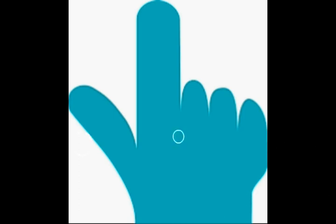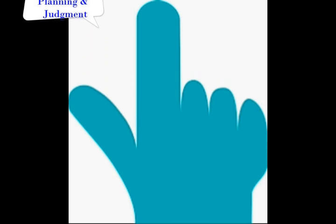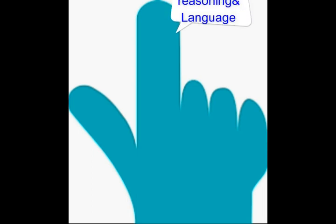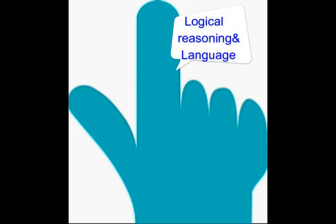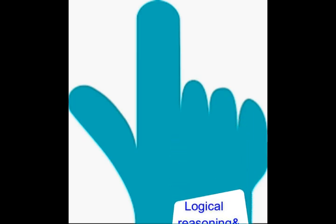Now let's look at the right hand finger functions, starting with the thumb and index fingers. For the thumb finger, you have communication, management, planning, and judgement — connected to the left brain. For the index finger, you can use logical reasoning and language ability, which are also connected to the left brain.